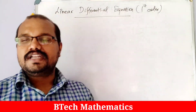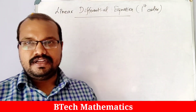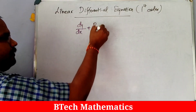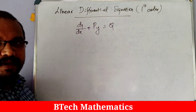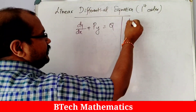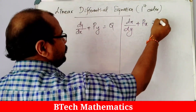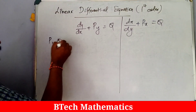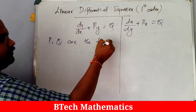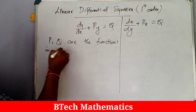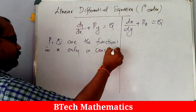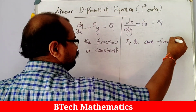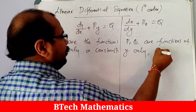We are moving to the topic: linear differential equation — first order, first degree. Its general form is dy/dx + Py = Q. There is also a second form: dx/dy + Px = Q. These are the two general forms of linear differential equations. Here P and Q are functions of x only, or constants.